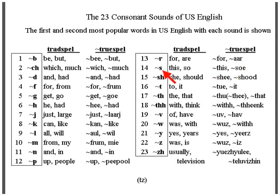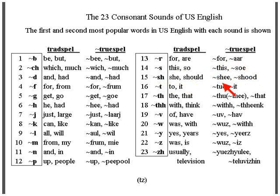The S sound — the most popular words include 'this,' 'it,' and 'so.' Then the SH sound, usually spelled with S-H. The most popular word is 'she,' followed by 'should.'